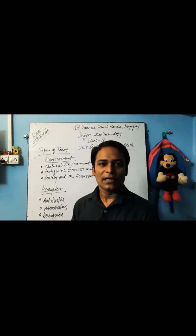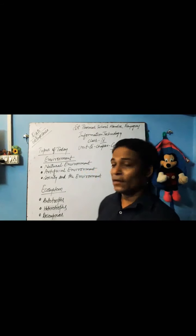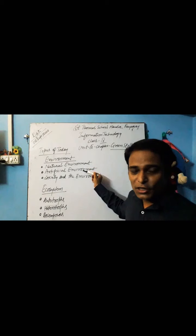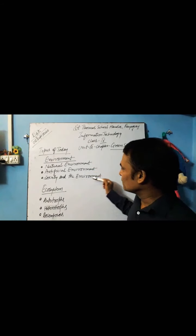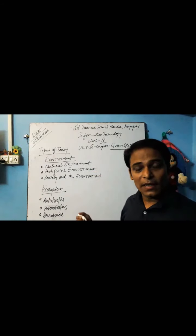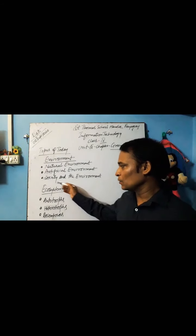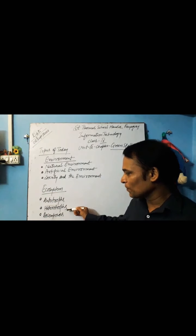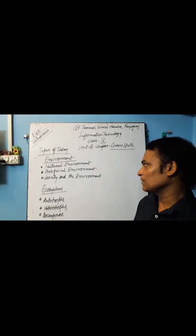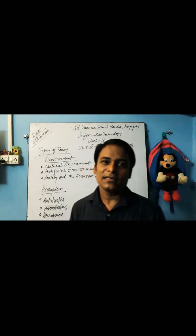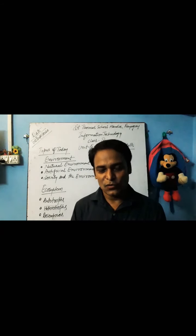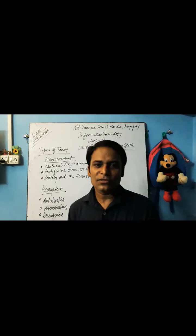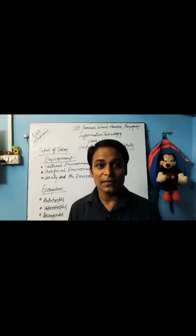Let's talk about today's topic: environment. We will cover natural environment, artificial environment, and society and the environment. After that, we have ecosystem, where we find three elements: autotrophs, heterotrophs, and decomposers. Your science teacher may have covered these thoroughly, but I will try my best to explain these things at my level.